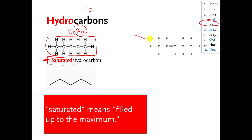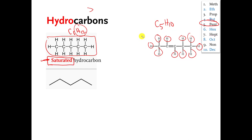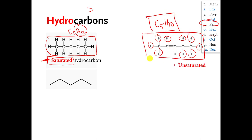This molecule over here is also C5, but it's not H12 — it's C5H10. This molecule is not stuffed with as many hydrogens as possible because it has a double bond here. So this particular molecule is an example of an unsaturated hydrocarbon.